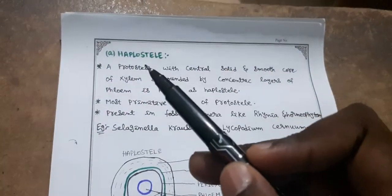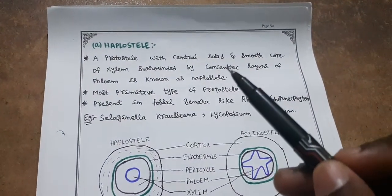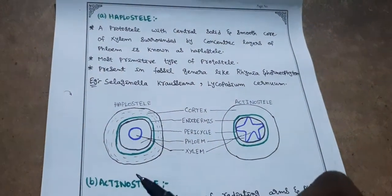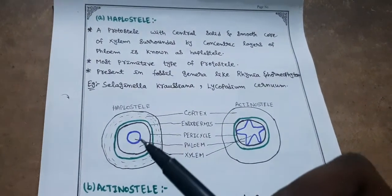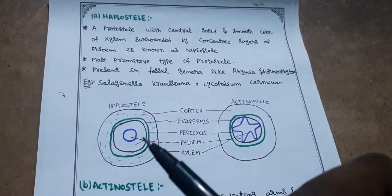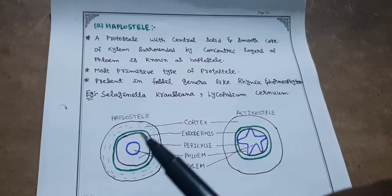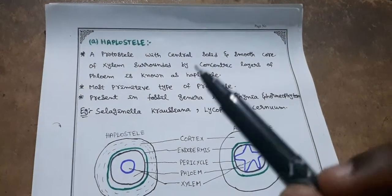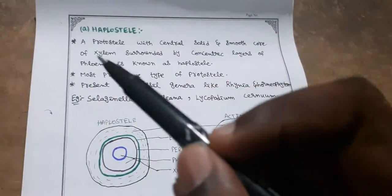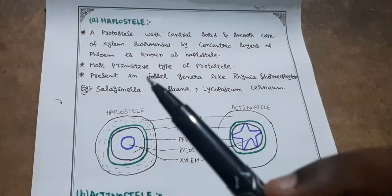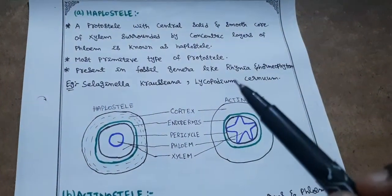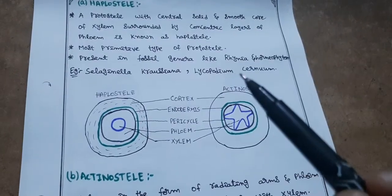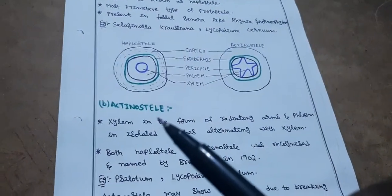First, haplostele — a protostele with a central solid and smooth core of xylem surrounded by concentric layers of phloem, pericycle, endodermis, and cortex. It is the most primitive type of protostele. It is present in fossil genera like Rhynia and Horneophyton, and living genera like Selaginella kraussiana and Lycopodium cernuum.